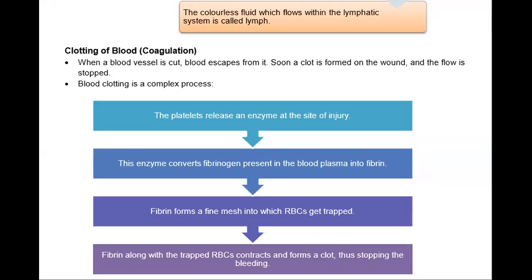In the last video, we talked about clotting of blood. When a blood vessel is cut, blood escapes from it, and soon a clot is formed on the wound and the flow is stopped. A clot is formed by trapping blood cells. Blood clotting is a complex process.